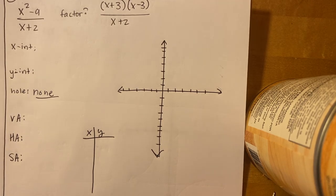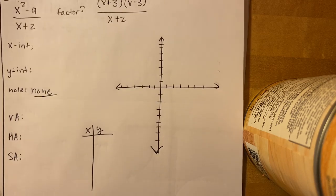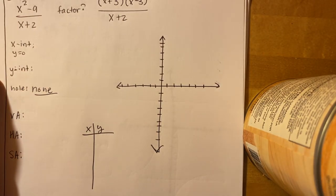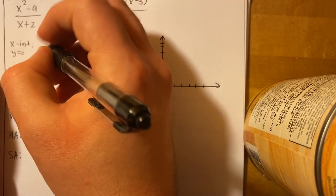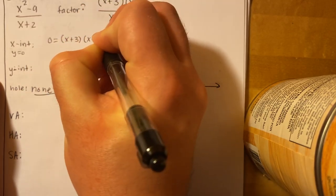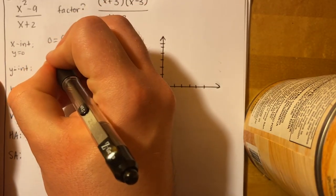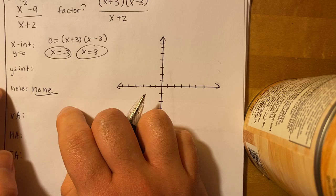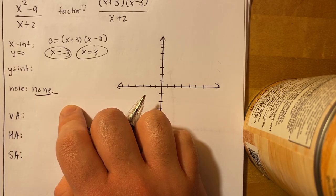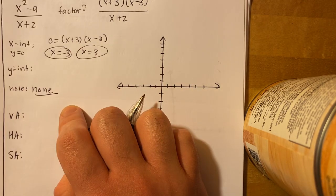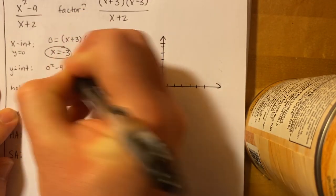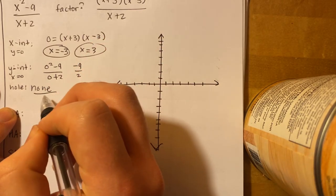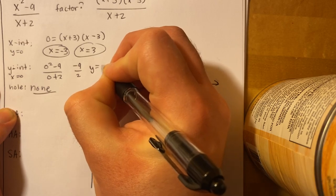For the x-intercept, set the numerator equal to zero: (x + 3)(x − 3) = 0, giving us x = negative 3 and x = positive 3 — two x-intercepts. For the y-intercept, set x = 0: (0² − 9) over (0 + 2) = negative 9 over 2, so y equals negative 4.5. It helps to use decimals when graphing.